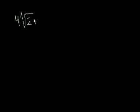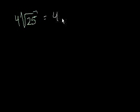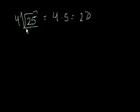What is 4 times the square root of 25? Well, 25 itself is a perfect square — this problem is a bit of a trick problem. The square root of 25 is 5, so this is just equal to 4 times 5, which equals 20.